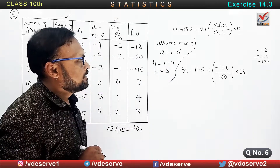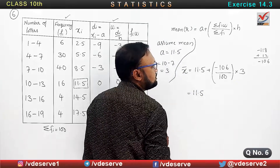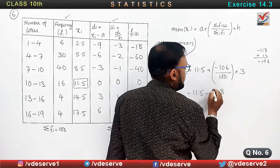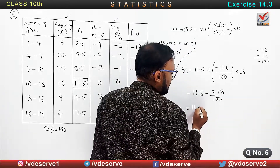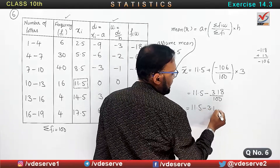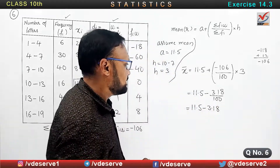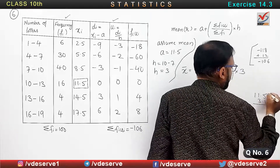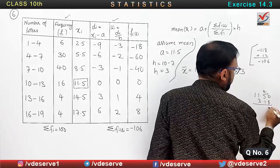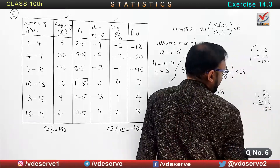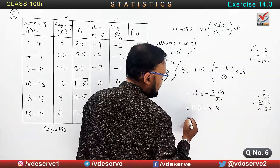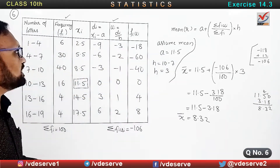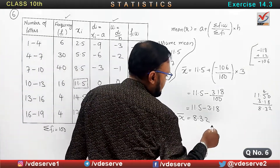Now putting the values in the mean formula: x-bar is equal to a = 11.5, plus sigma fi ui = minus 106, divided by sigma fi = 100, into h = 3. So 11.5 plus (minus 318 divided by 100), which is 11.5 minus 3.18. So the final answer is x-bar = 8.32. The mean is 8.32.